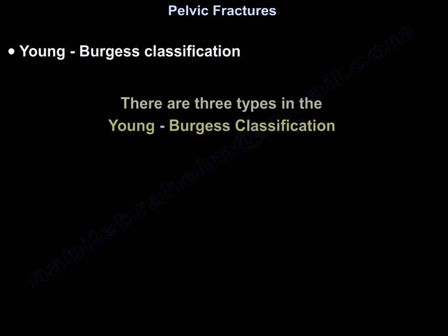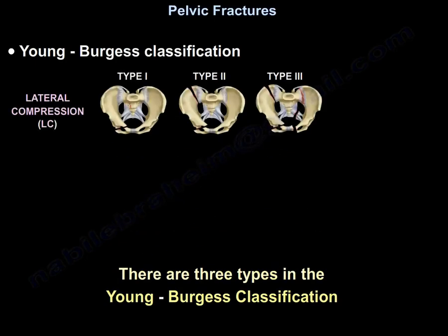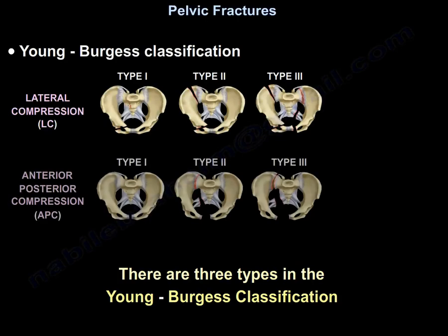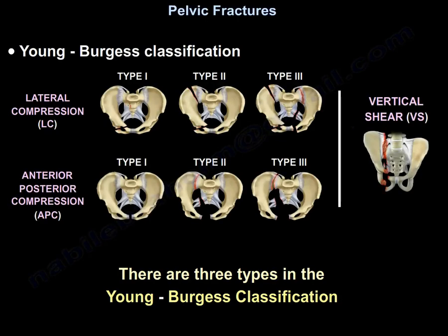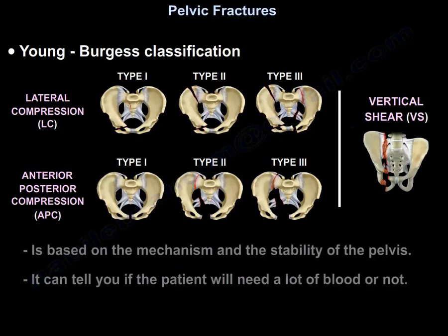Young and Burgess classification has three types: lateral compression, anteroposterior compression, and vertical shear. This classification is based on the mechanism and the stability of the pelvis, and it can tell you if the patient will need a lot of blood or not.